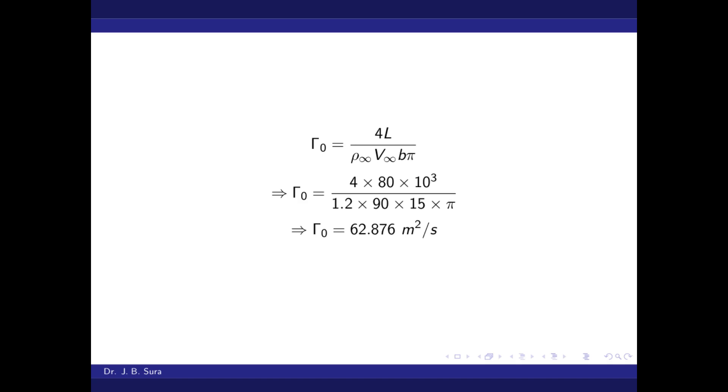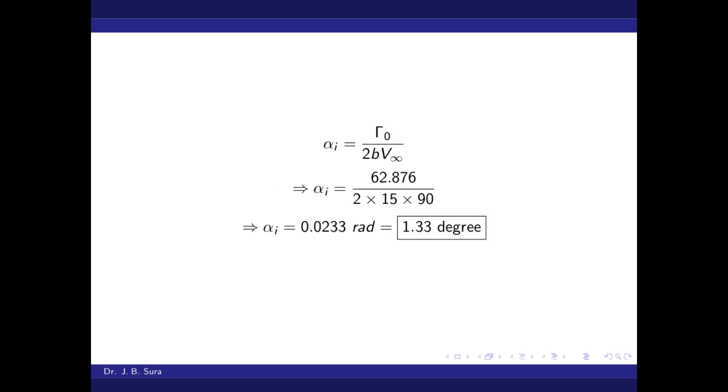Therefore circulation at zero equals 4 times 80 times 10³ divided by 1.2 times 90 times 15 times π. The answer is Γ₀ equals 62.876 meter squared per second.